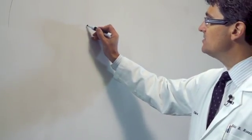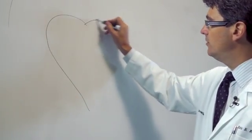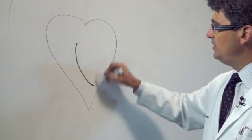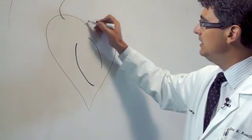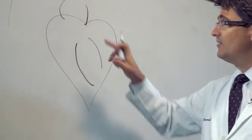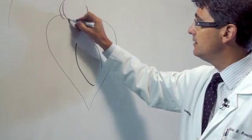The aortic valve is the last valve in the heart before blood is delivered to the rest of the body. The aortic valve sits right at the top of the heart between the left ventricle and the aorta. In fact, the aortic valve sits inside the aorta.